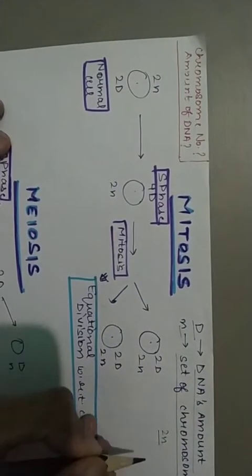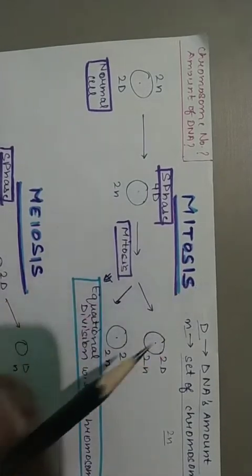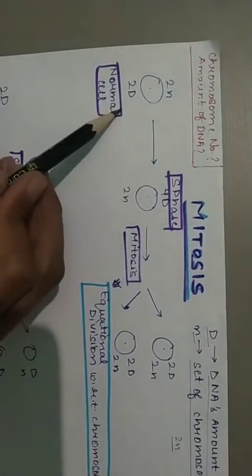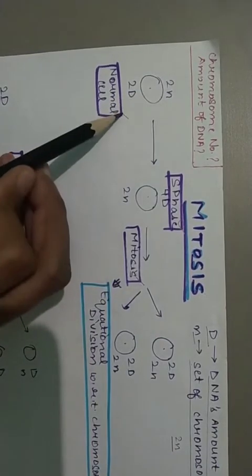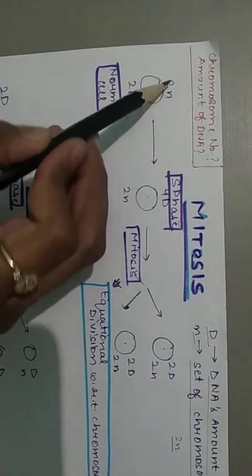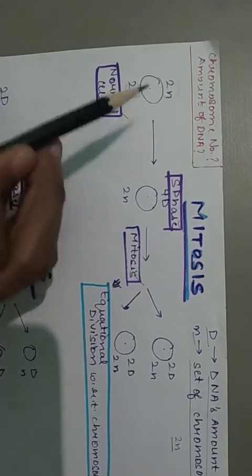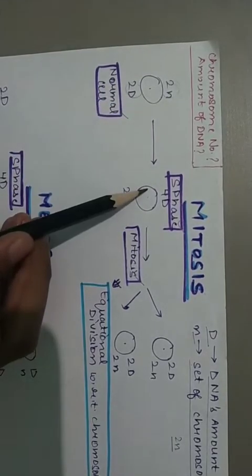Mitosis has three stages: normal cell, then S phase, then mitosis. Normal cell ke andar 2n hota hai or 2d amount hota hai DNA ka. S phase ke andar ja ke kya hoga ki amount of DNA 4d ho jayega but chromosome number same rahenge.